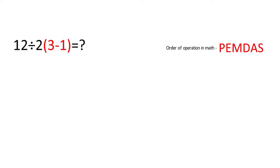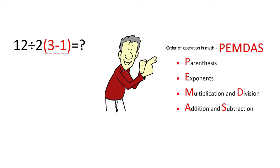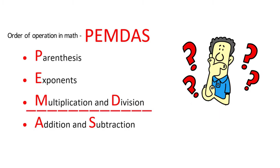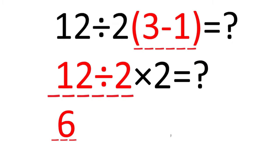The order of operations tells us to solve what's in parentheses first: 3 minus 1 equals 2. Next, PEMDAS tells us to do multiplication and division, but importantly we go left to right. So we do division first: 12 ÷ 2 = 6. Then the final expression is 6 multiplied by 2.